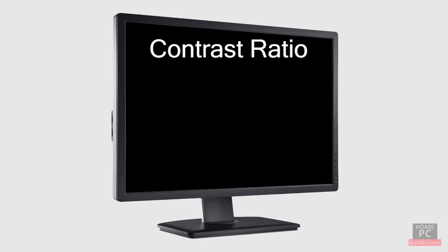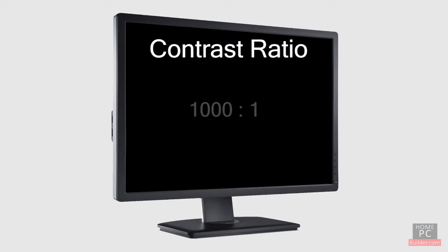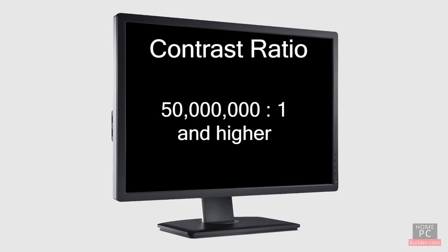Contrast ratio refers to the difference between light and dark a monitor can display. 700 to 1 is a good minimum, and as you go up in price, you'll find 1000 to 1, 250 million to 1, and higher contrast ratios.